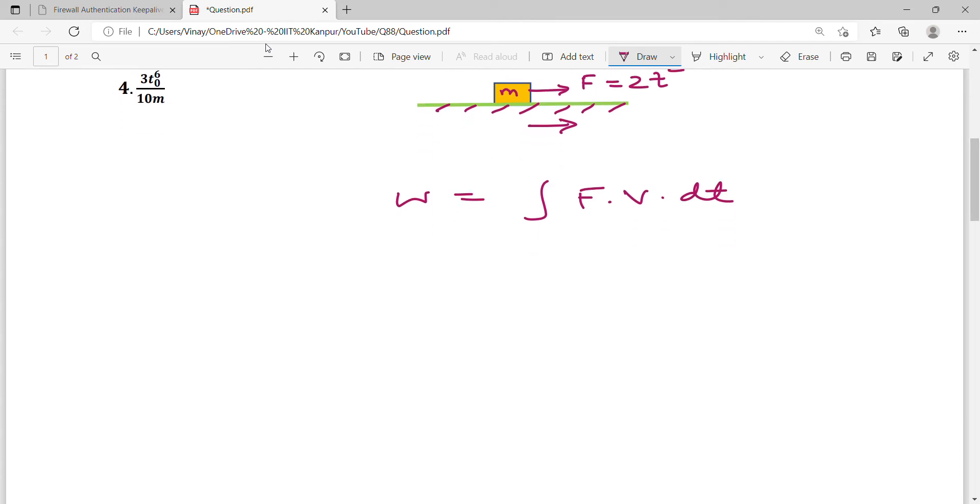Now force is given. So what is the acceleration? F upon M, Newton's second law. 2t² by M. Now this block of mass is at rest initially. Initial velocity is 0 and it is straight line motion. So V equal to u plus at. So this goes away. So what is velocity? 2t² by M into t.